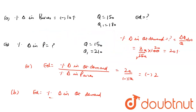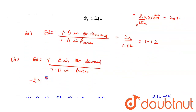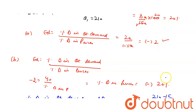So we can write here: percentage change in quantity demanded is 40%. We need to find percentage change in price, so we write it as unknown. Therefore, percentage change in price equals minus 20%. So for Part A, elasticity of demand came out to minus 2, and for Part B, percentage change in price came out to minus 20%.